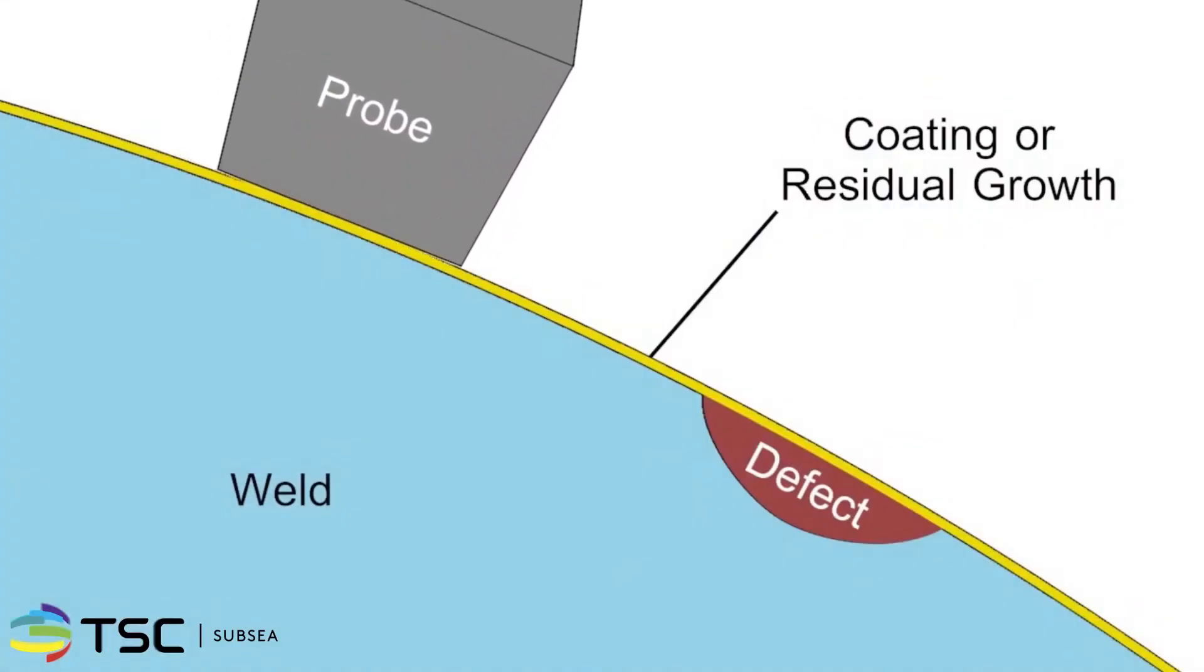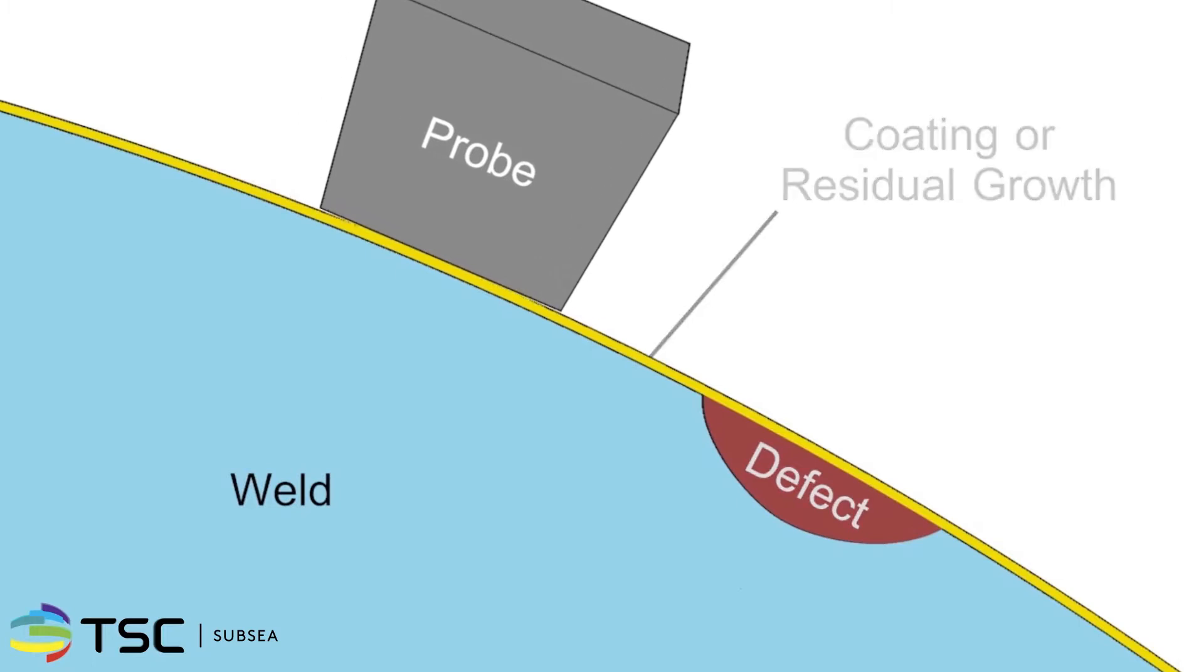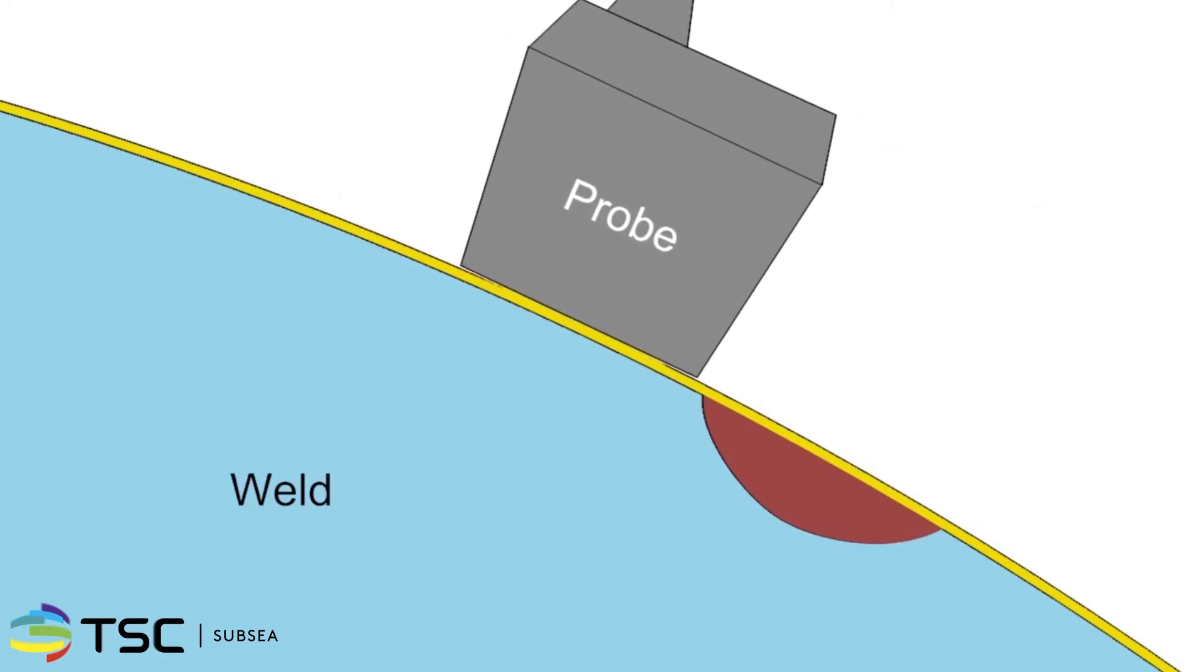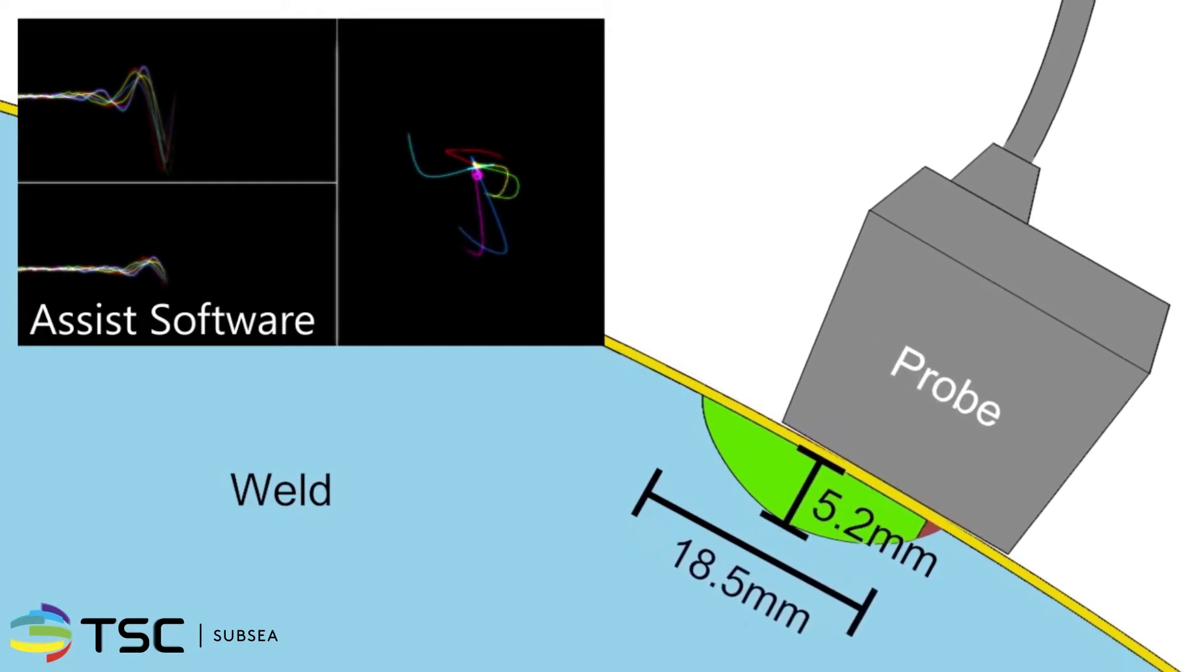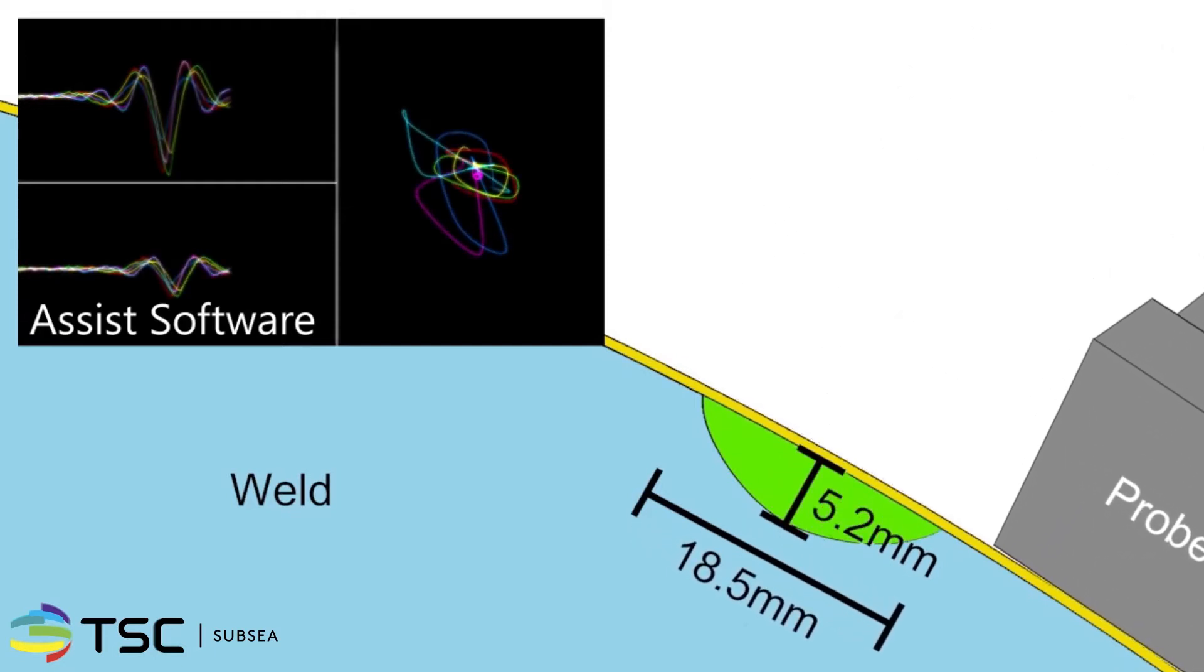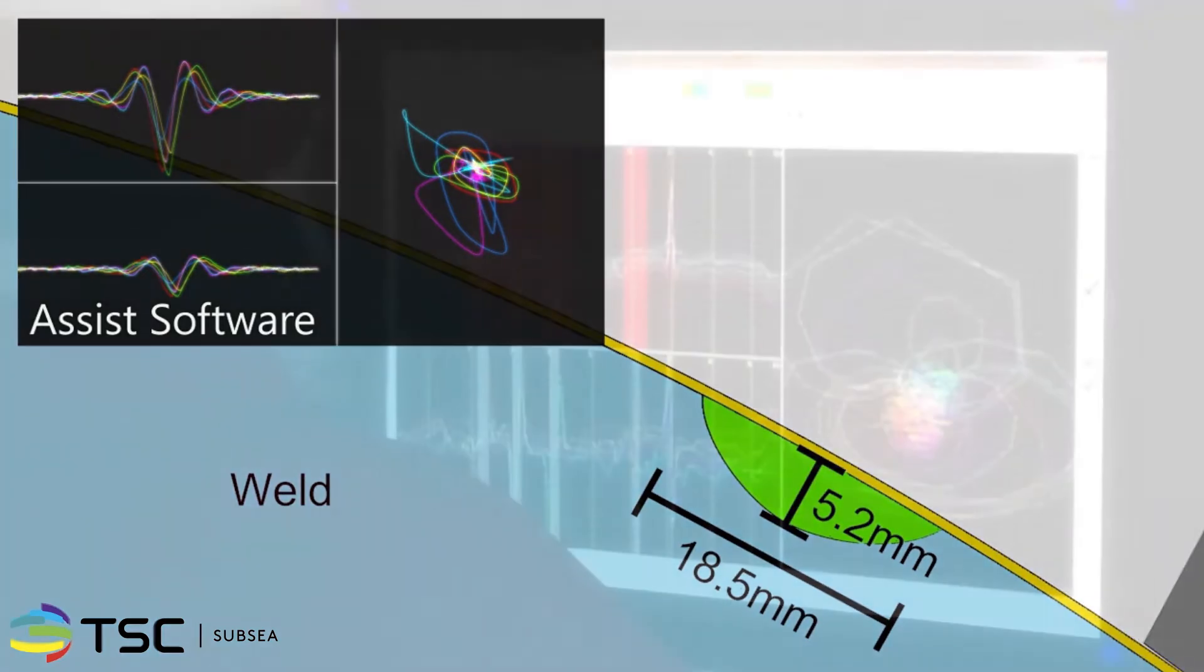As the diver passes the probe over the weld, the ACFM electromagnetic technique identifies the start and end of the defect, as well as the defect depth. The data is presented to the control room operator in real time via TSC's bespoke assist software, allowing for immediate interpretation.